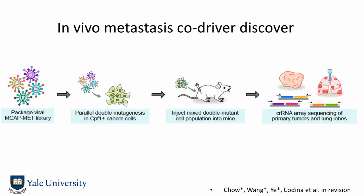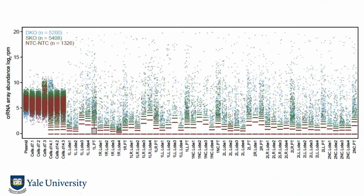We made lentivirus, transduced cells that are not metastatic, then transplanted them into mice and let metastases happen. We sequenced the plasmid, the cell pool, and all the lung lobes from various mice. The cell pools had a tight distribution of double knockout guide RNA arrays as well as double neutrals. The lung lobes with cancer metastases were enriched in single or double knockouts. Some mice showed a monoclonal spread dominated by one clone, while others had more diverse clones.